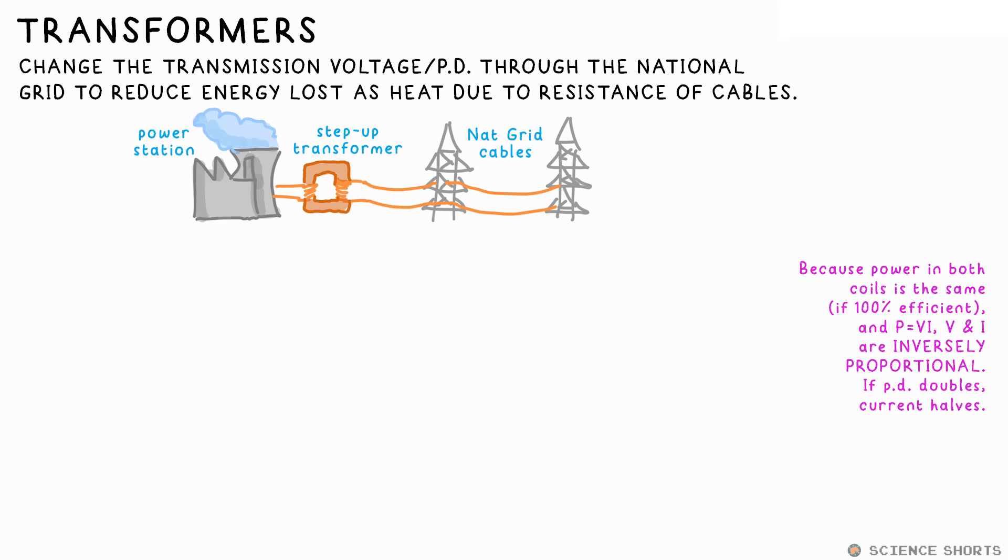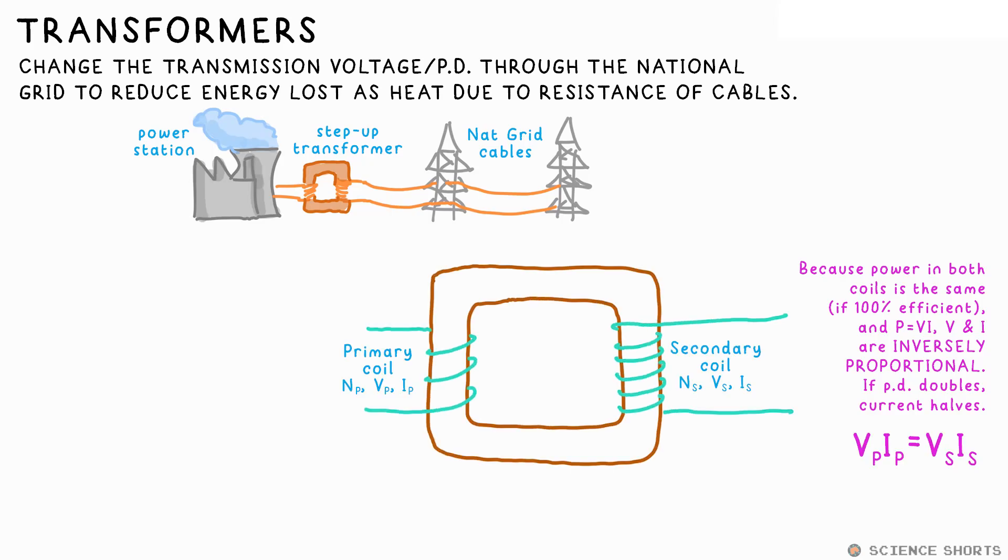In an ideal world, the power in and out of a transformer should be the same. That would mean it's 100% efficient, so V and I would be inversely proportional. We can therefore say that V times I for the primary coil is equal to V times I for the secondary coil.